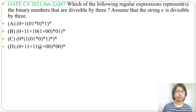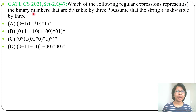Hi! Let's solve one previous question of regular language from GATE CS 2021, Set 2, Question number 47. Which of the following regular expressions represents the binary numbers that are divisible by 3? Assume that the string epsilon is divisible by 3.